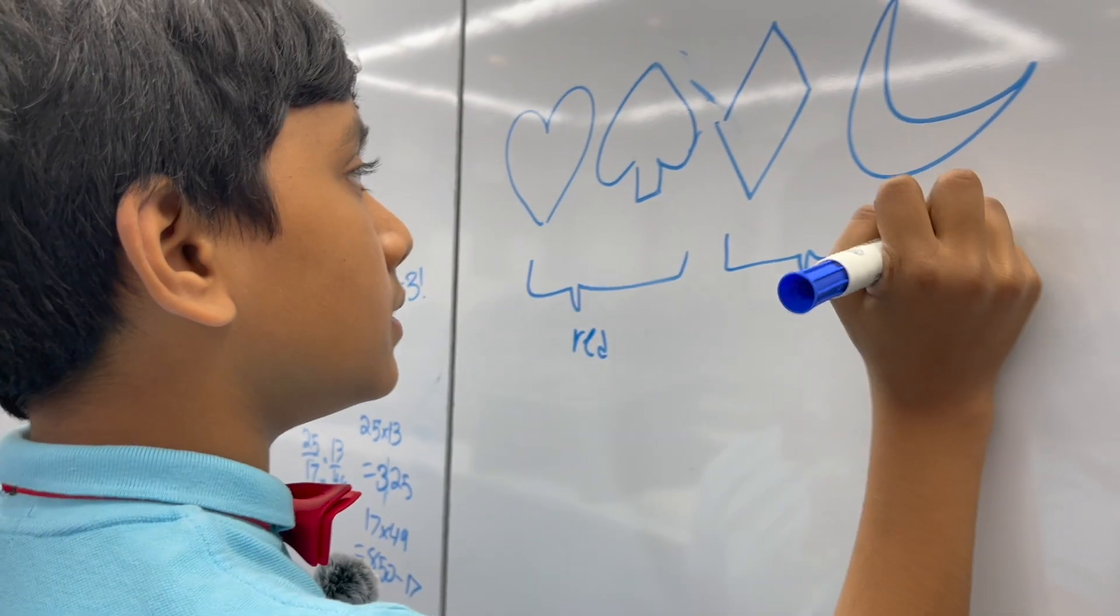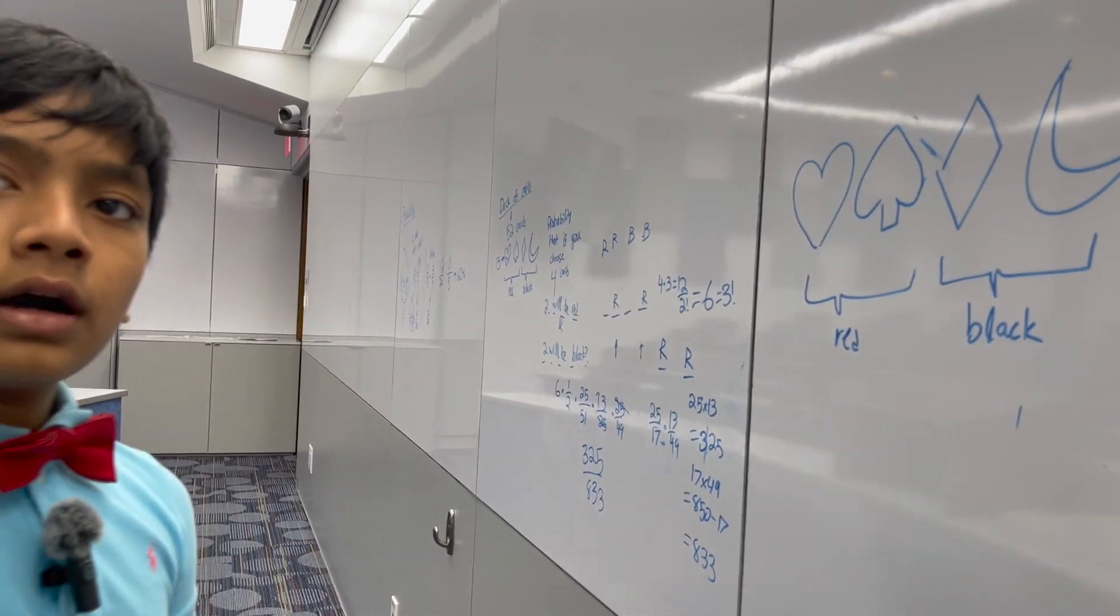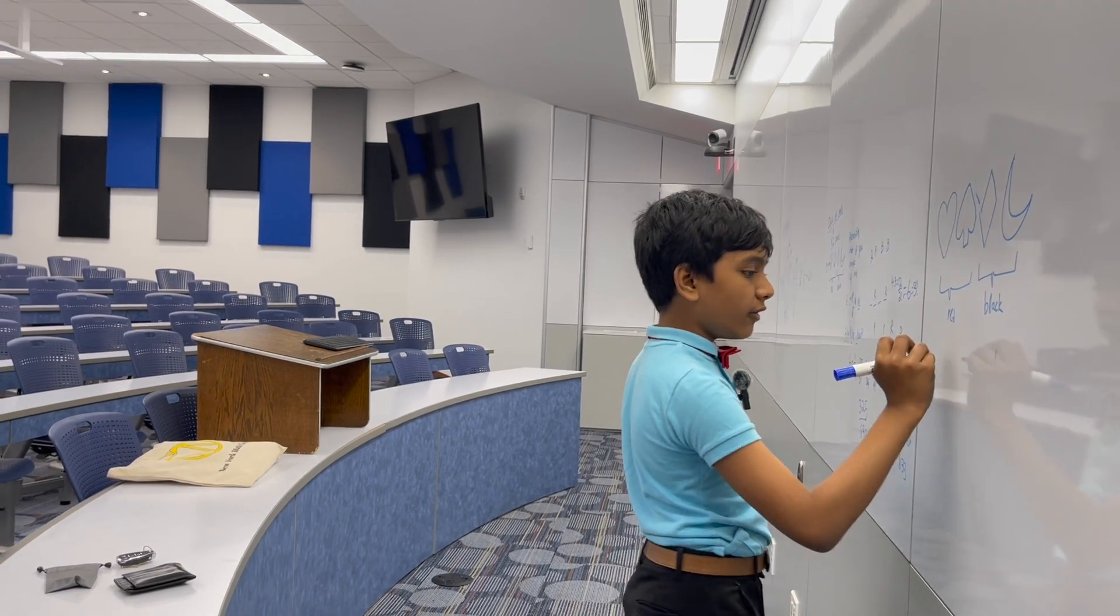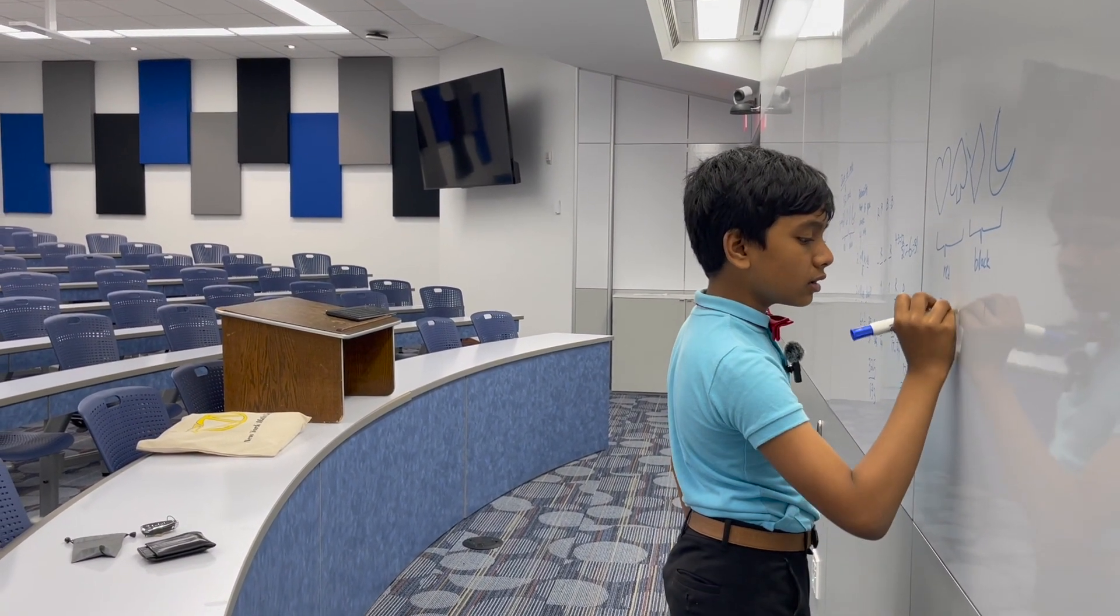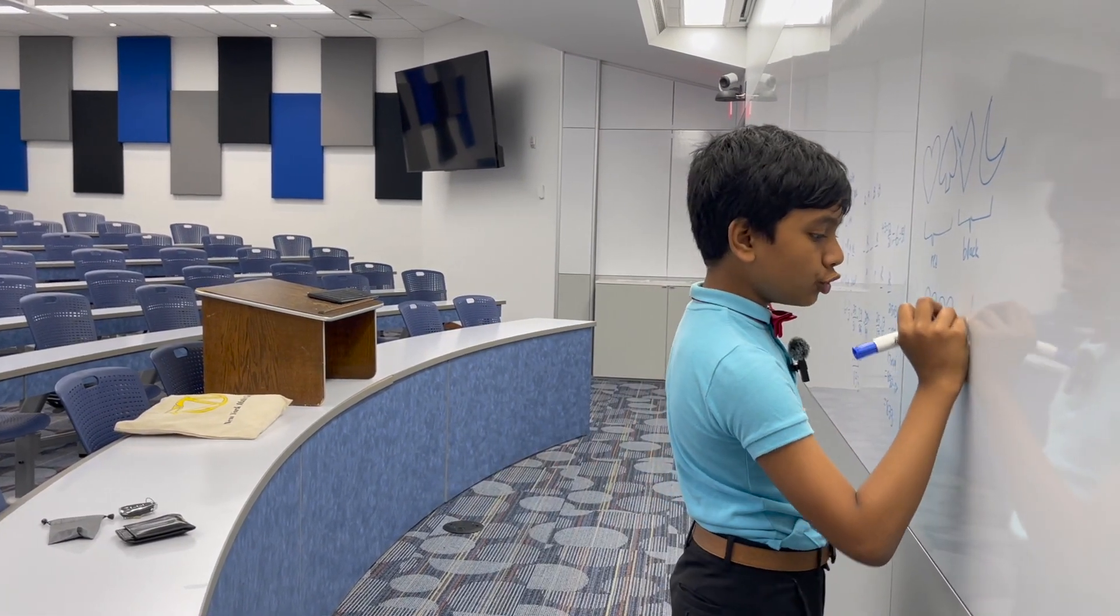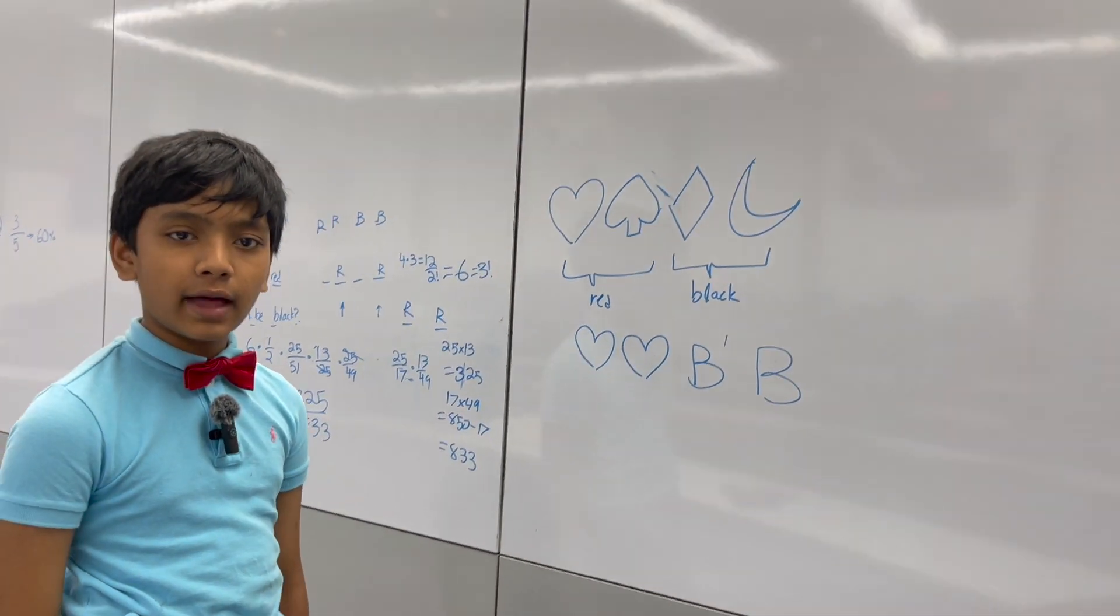Red and the black. And now, I want you to find out the probability of getting 2 hearts and then any 2 black suits. What is the probability of doing that?